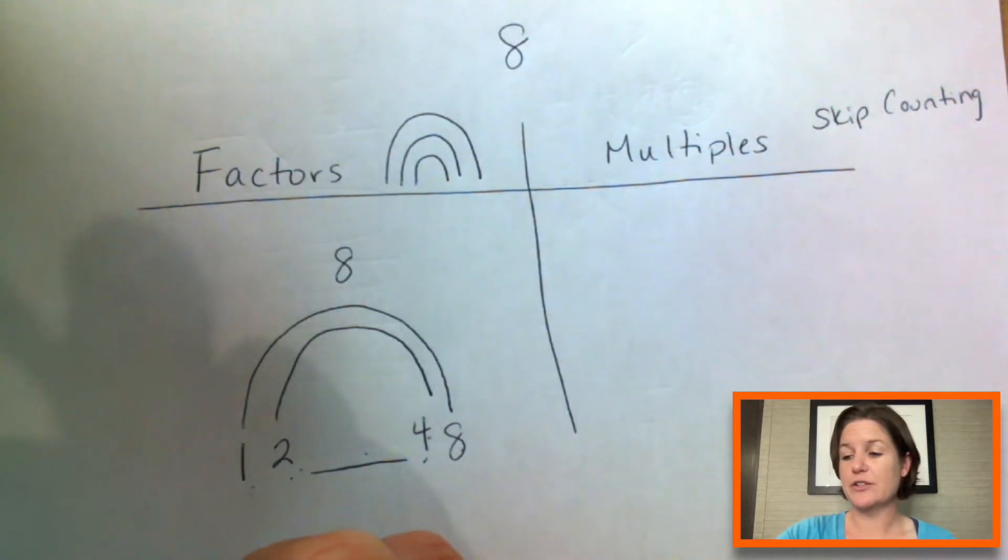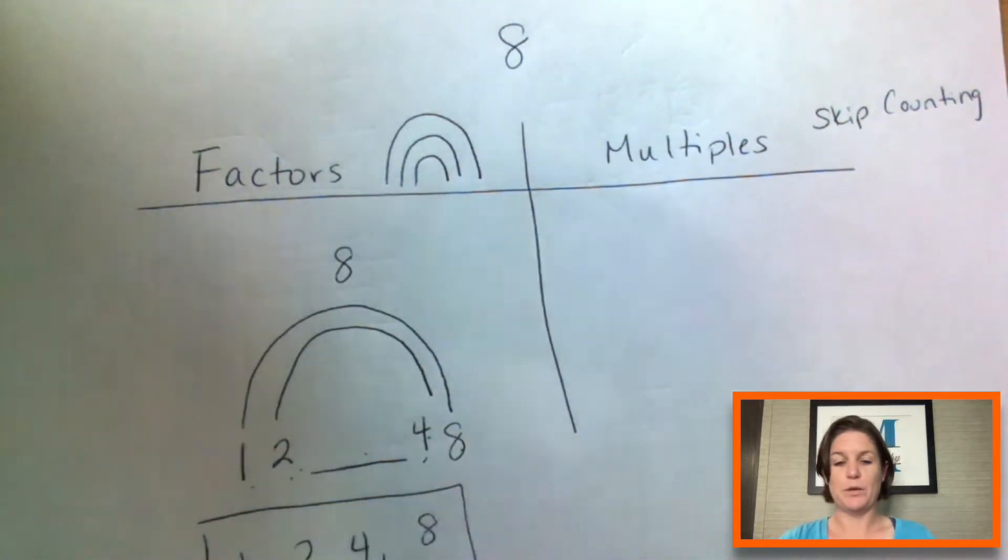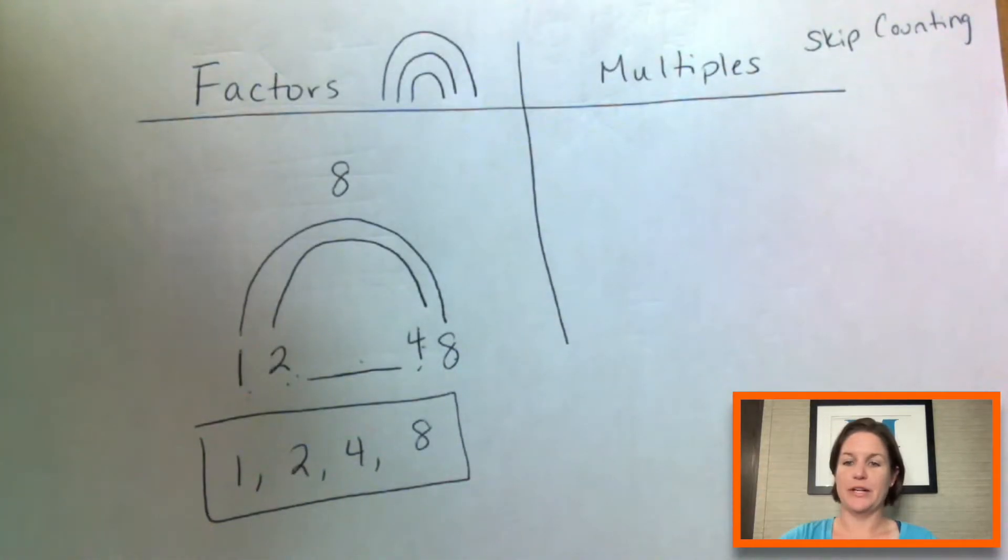which means the factors are one, two, four, and eight. Okay. There you go.